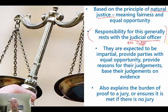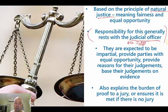Fairness and equal opportunity — the judge also explains the burden of proof to a jury. He says it's on the prosecution; the defence doesn't have to present any information or prove that they didn't do it. And the judge explains the standard of proof and what beyond reasonable doubt means, so the jury is fully aware of the standard they need to believe the evidence has reached.